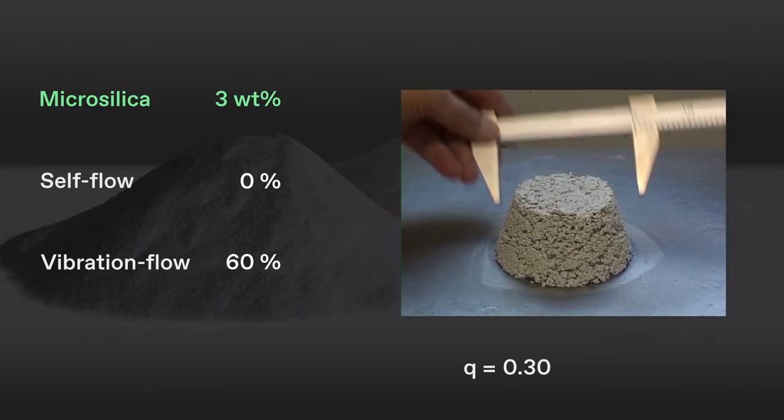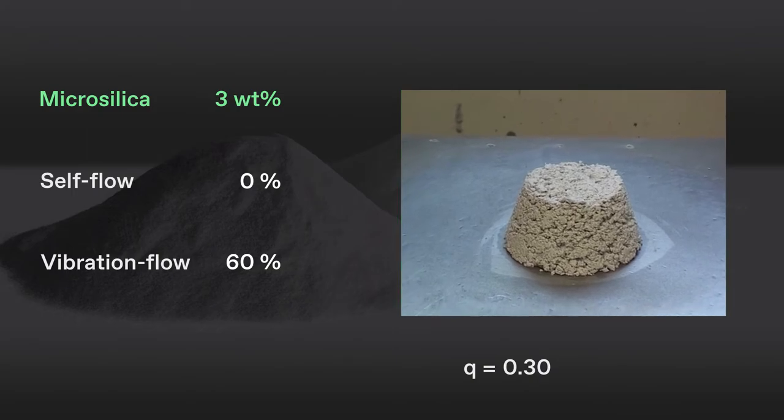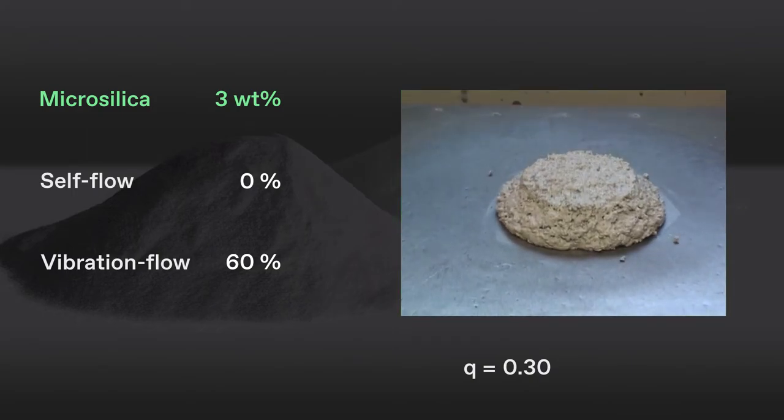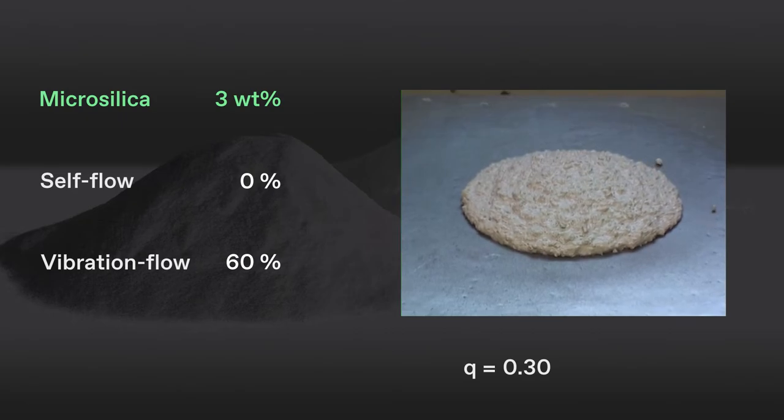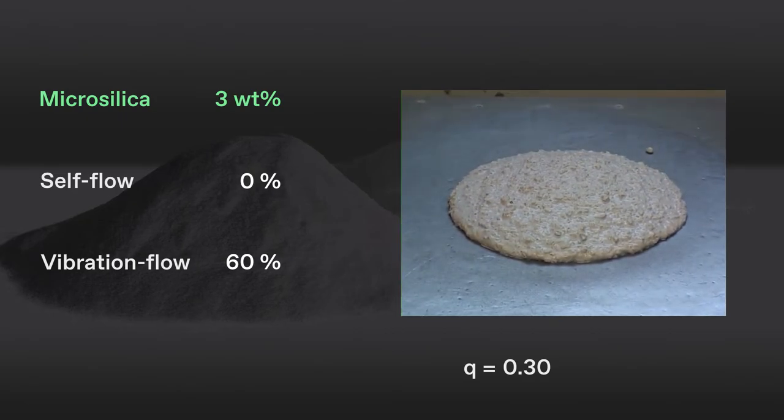We continue with the same castable formulation, but will decrease the Q value by adding three percent of Elkem microsilica. We will then measure the effect of this dosage on self-flow and vibra-flow.